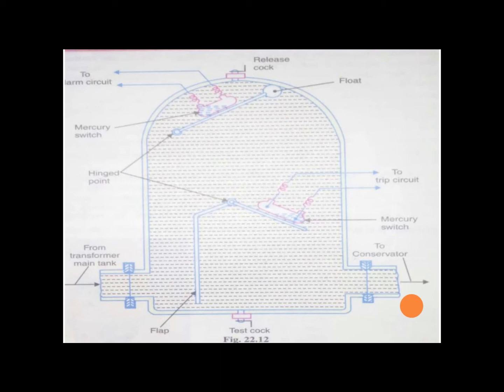When the gas is accumulated in the upper part of the housing, the oil level inside the housing falls. Due to which the hollow float tilts and closes the contacts of the mercury switch attached to it. This completes the alarm circuit to sound an alarm. Due to this, the operator knows that there is some incipient fault in the transformer. The transformer is disconnected and the gas sample is tested. The testing results give the indication what type of fault is started developing in the transformer.